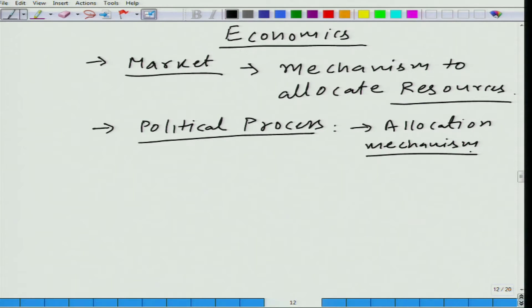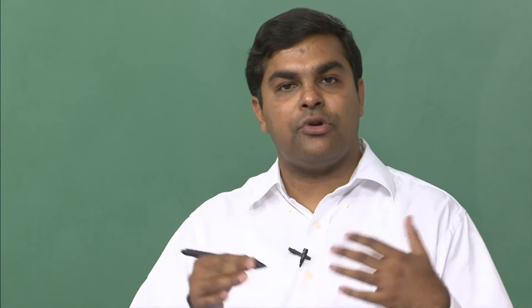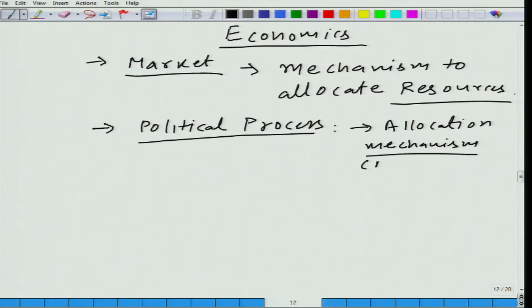Political process affects allocation through taxation, through aggregation of preferences. These terms, if they are not clear to you, do not worry about it — as we progress in this course, you will learn these terms. The key point is that political process affects the allocation mechanism, namely the market. That is why we study political process in economics.